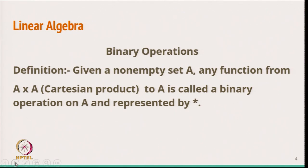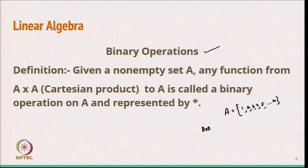In linear algebra, we start with the very basic relation called binary operations. Binary means it is discussing two things. The definition of binary operation is: given a non-empty set A, any function from A cross A — that is the Cartesian product — to A is called a binary operation on A, represented by star. For example, if A is the set {1, 2, 3, ..., 10}, then A cross A gives pairs like (1,1), (1,2), (1,3), up to (1,10), and (2,1), (2,2), and so on.